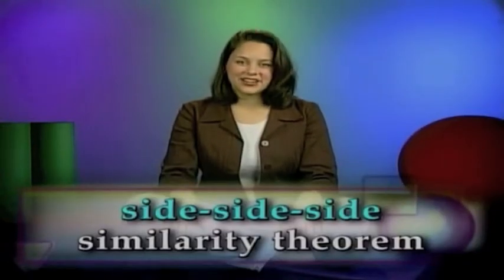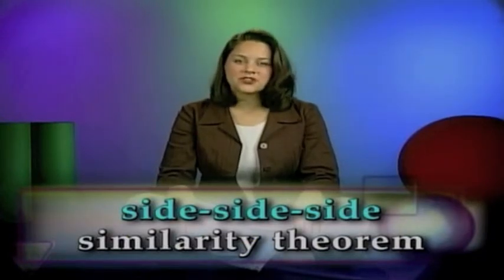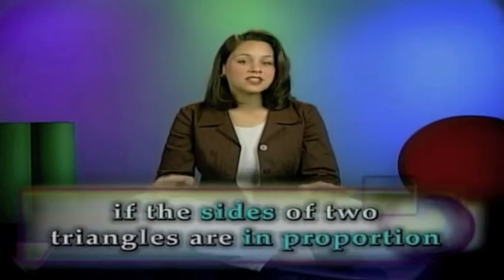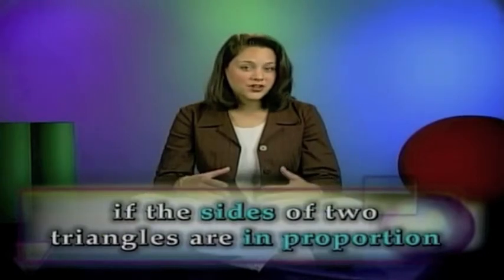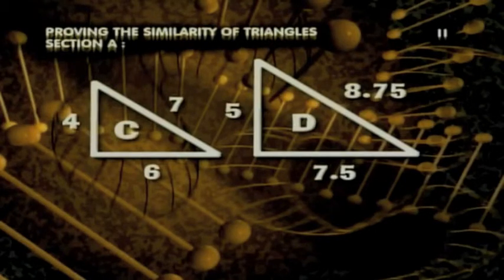Our last theorem is the side-side-side similarity theorem. The side-side-side similarity theorem is similar to the example we just showed you a minute ago. It says that if the sides of two triangles are in proportion, then the triangles are similar. So for triangles C and D, we set up ratios.